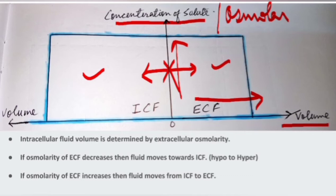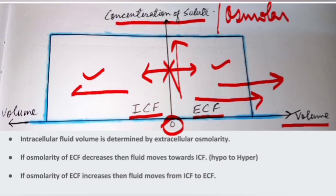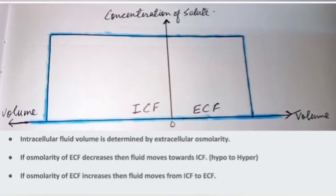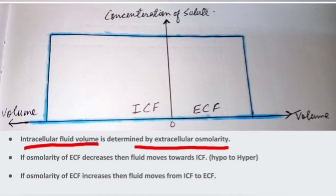The zero line separates the extracellular fluid and the intracellular fluid. Moving to the right represents the extracellular fluid and moving to the left represents the intracellular fluid. An important point to remember is that the intracellular fluid volume is determined by the extracellular osmolarity, so a change in extracellular osmolarity will affect the intracellular fluid volume.